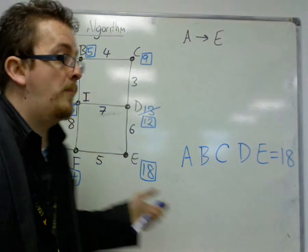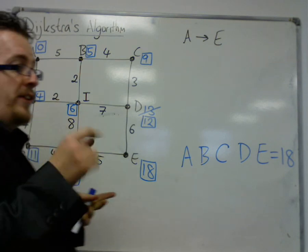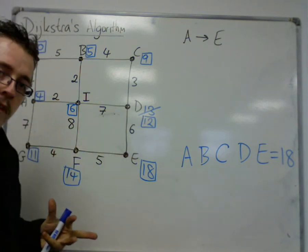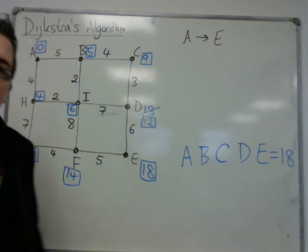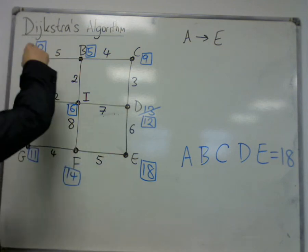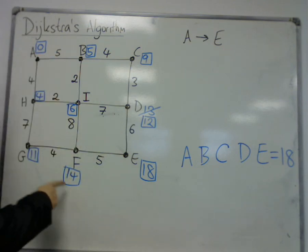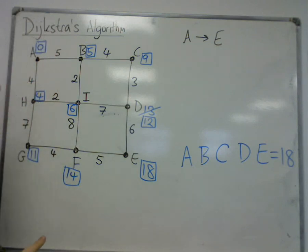If there was then like a part B for this question, it said, right, write down the shortest distance from A to F. Make sure at that point you don't say to yourself, right, okay, I've got to do Dijkstra's algorithm all over again. You don't. A to F, it's 14. Just read it off your graph. Okay, so don't have a silly idea and think you'll have to do Dijkstra's algorithm all over again.